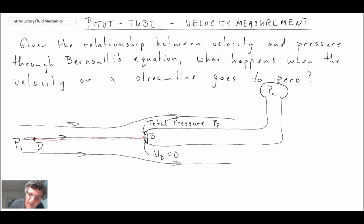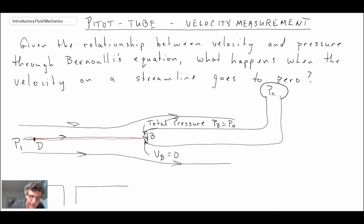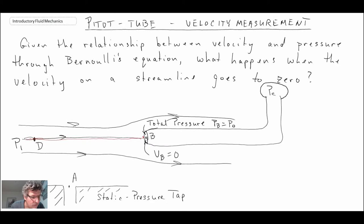So PB is equal to P0 — that is how we refer to the total pressure. For another pressure measurement, if we assume a wall over here at point A, we call this a static pressure tap, and it measures what we call P infinity, or the static pressure in the flow.